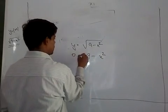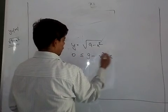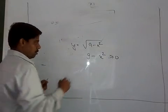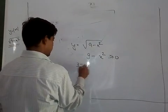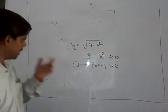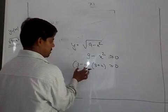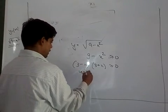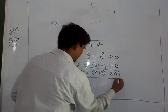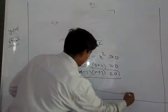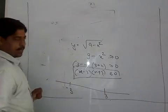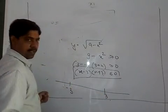So this should be greater than 0. If 9 minus x square is greater than 0, this can be factorized as 3 minus x times 3 plus x greater than 0. So whenever we get something like this, we can work with the inequality.